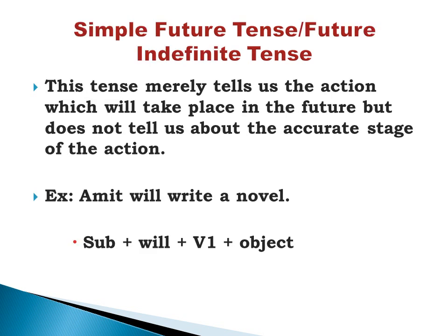Simple future tense, also known as future indefinite tense, merely tells us that an action will take place in the future but does not tell us about the accurate stage of the action. Example: Amit will write a novel — but what stage his action will be at will not be known. Formula: subject + will + V1 form of the verb + object. 'Will' is the indicator of future tense and must always be used.